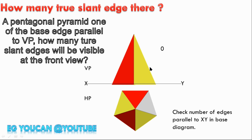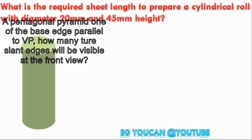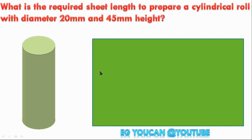If you ask the same in development, there is a cylinder. The cylinder is prepared for the sheet. The length of the sheet is the circumference. We know the formula: 2πr. If the diameter is 20 mm, the radius is 10 mm. So 2 × π × 10 = 62.8 mm. The sheet is 62.8 mm × 45 mm.